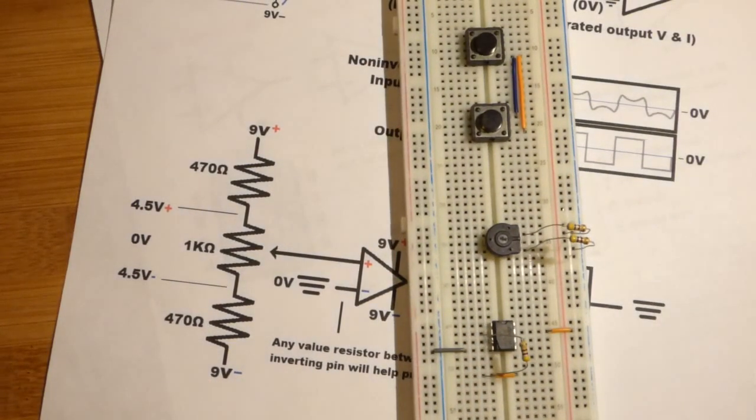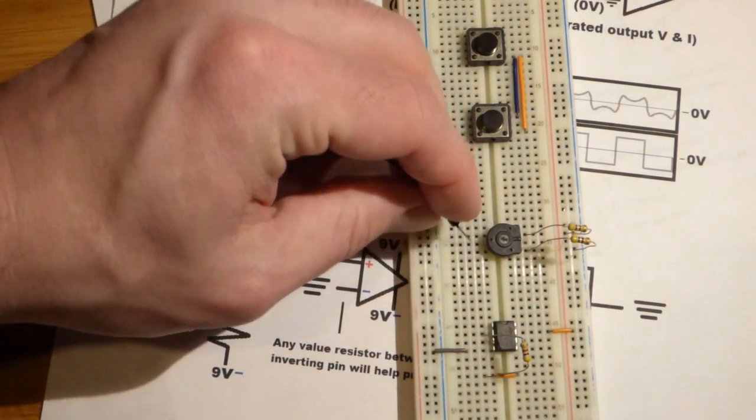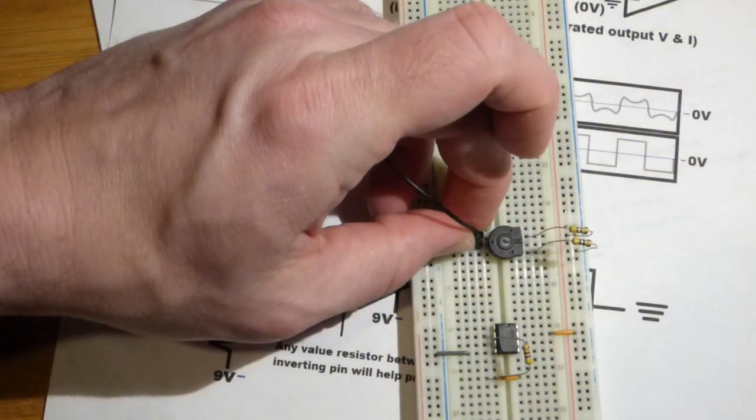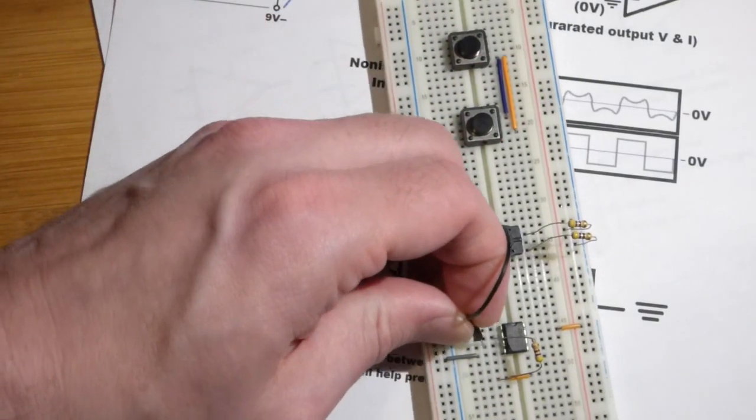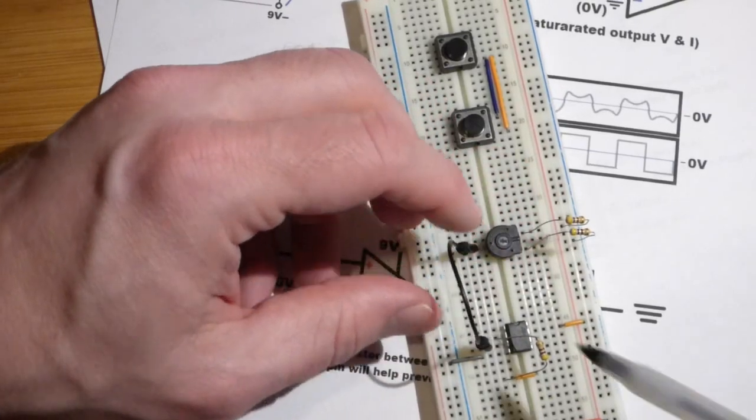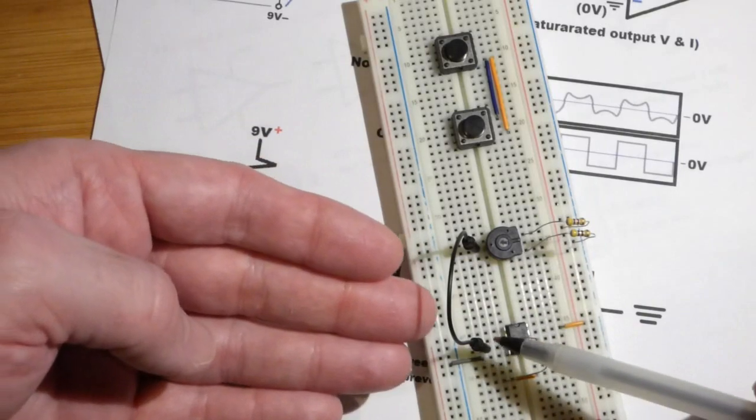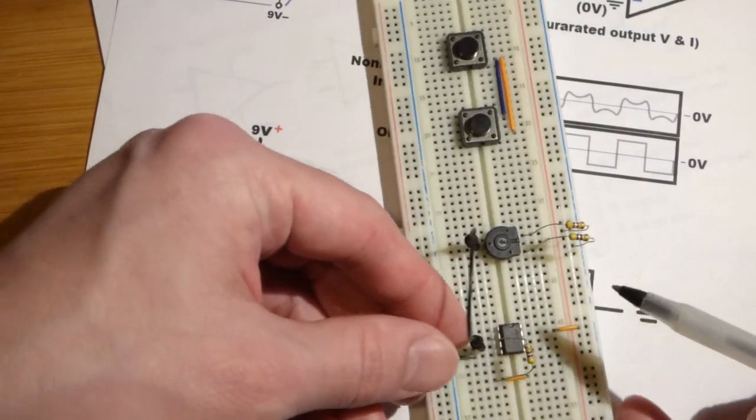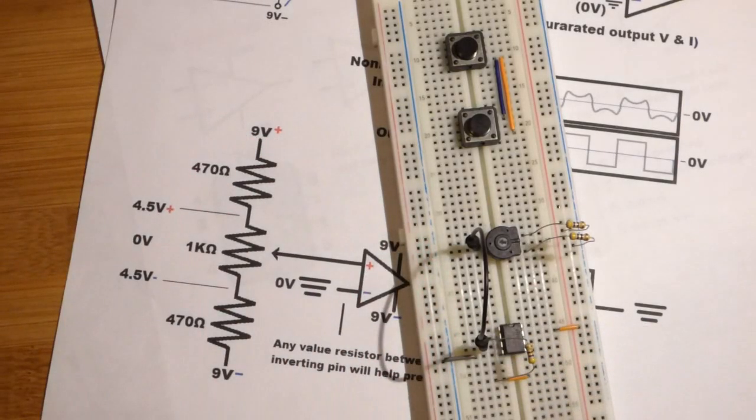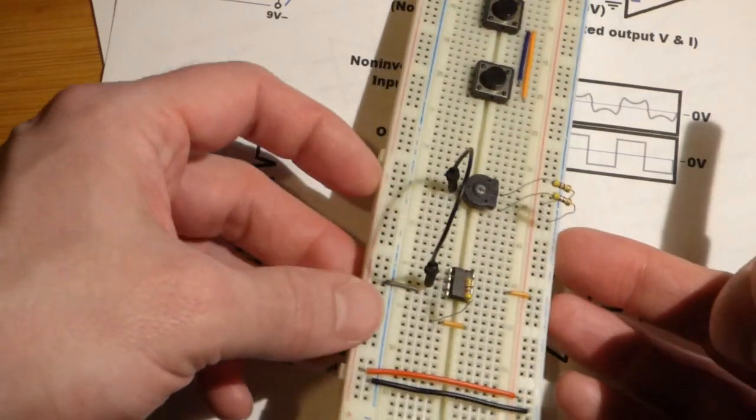We're just going to take a jumper and jump that. We could also use a resistor. Again, there's going to be no current flow. At the output of the trim pot, if we used a resistor, there would be no current flow. So the voltage will still get there. The two input pins, they don't allow current. You'll probably get a tiny trickle. But for the most part, no current flows through the inputs.